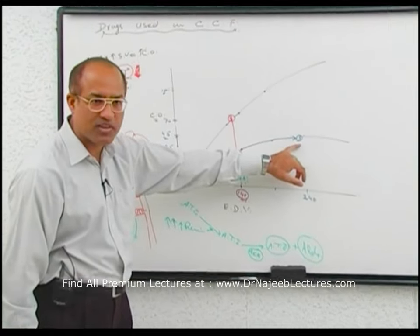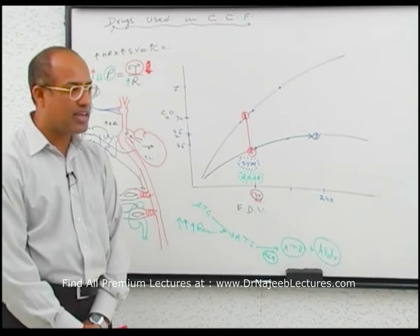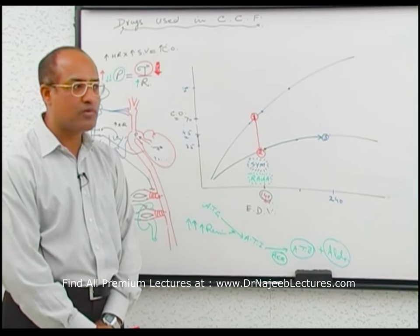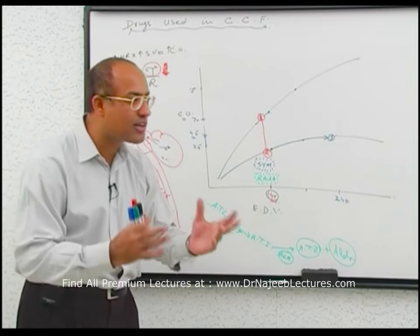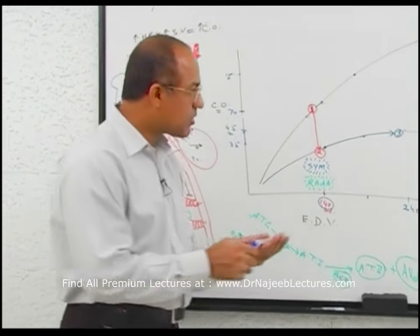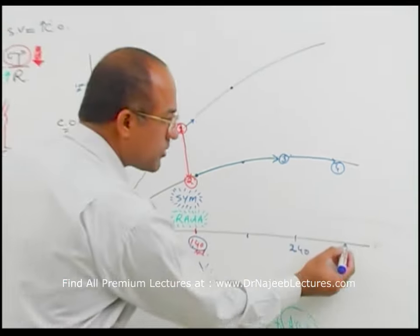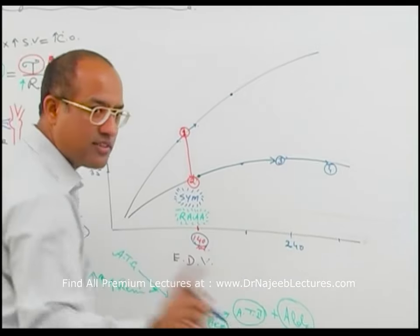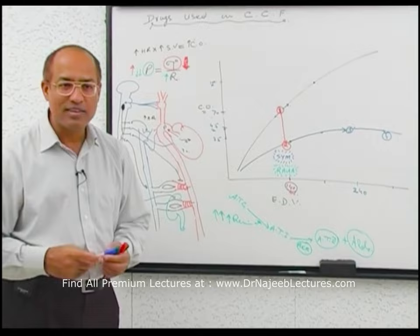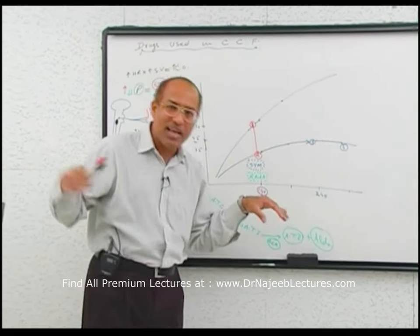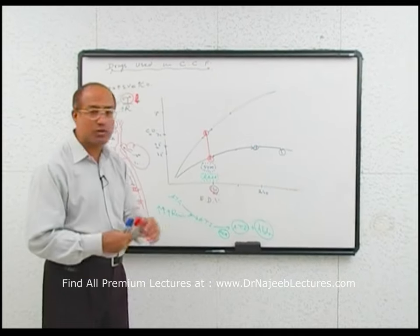The failing heart is now operating under these circumstances at point 3. Without treatment, with persistent excessive angiotensin-2 and aldosterone, the heart undergoes structural pathological remodeling and becomes even weaker. End-diastolic volume keeps increasing while cardiac output is not improving — it is a sick donkey with too much load working against too much resistance, and the situation progressively deteriorates.